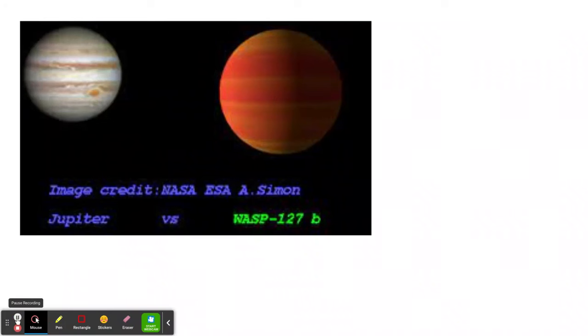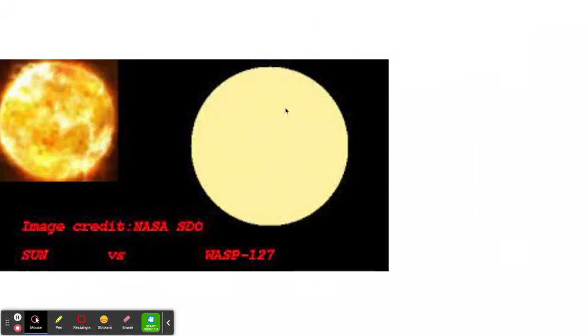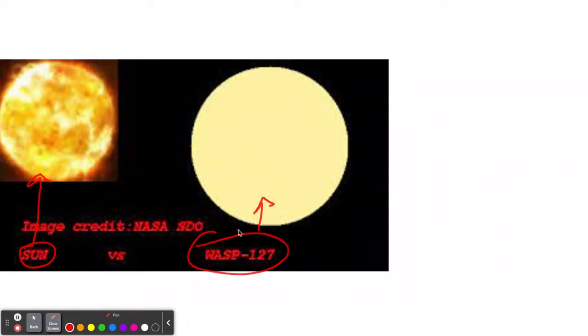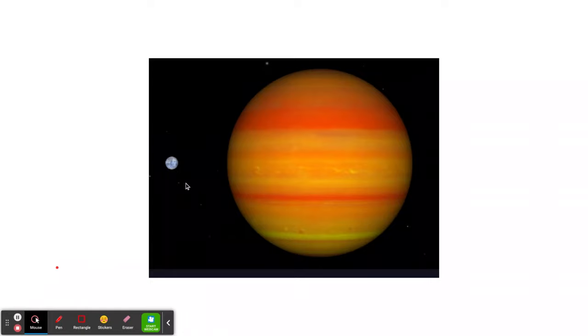Let's show you a comparison. This is from NASA. There's a comparison between our sun and WASP-127, which is slightly bigger. They're both G-type yellow dwarfs. And here's Earth compared to WASP-127b.